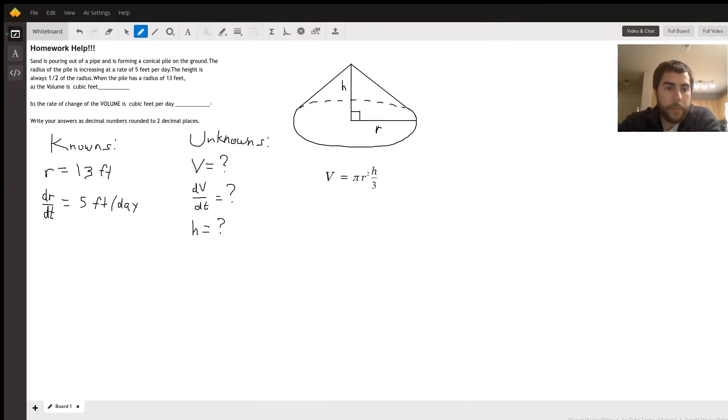Sand is pouring out of a pipe and forming a cone on the ground. The radius of the pile is increasing at a rate of five feet per day. The height is always half the radius. When the pile has a radius of 13 feet, it asks for the volume in cubic feet as well as the rate of change of volume in cubic feet per day. Write your answers as decimals rounded to two places.